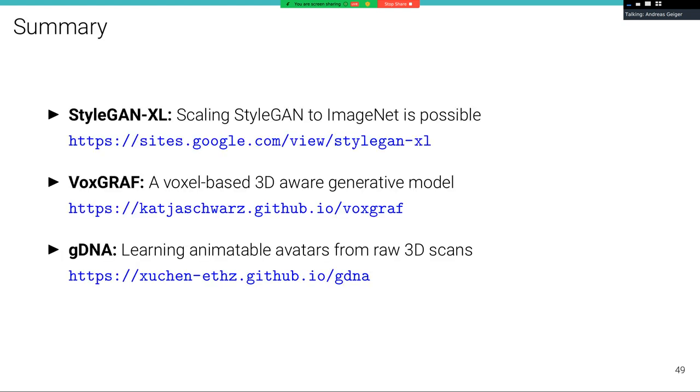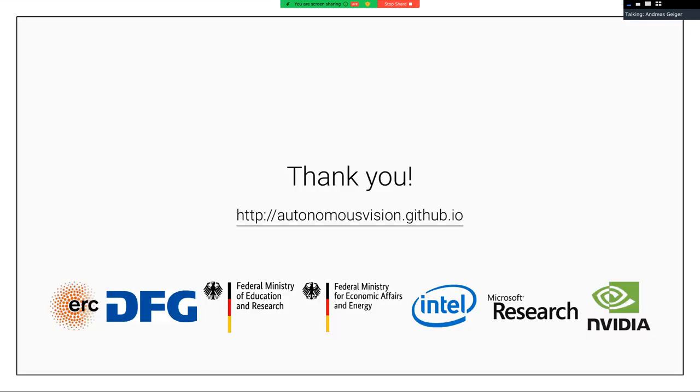That's all for today. Let me briefly summarize. I presented StyleGAN-XL, which is a model for scaling StyleGAN to ImageNet. Then I moved on to VoxGRAF, a voxel-based 3D-aware generative model. And finally presented gDNA, which is a model for learning animatable avatars from raw 3D scans. All our code is available, so if you want to try out our models, feel free. I put the link to the project pages here. And I'm looking forward to your questions now. Thank you.